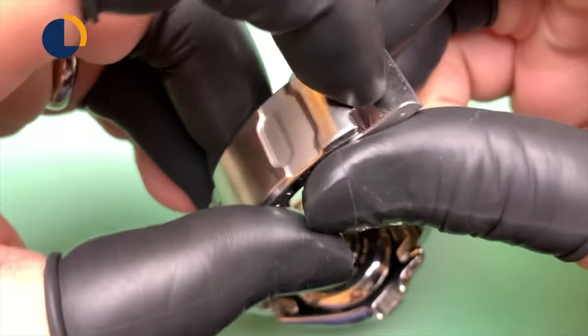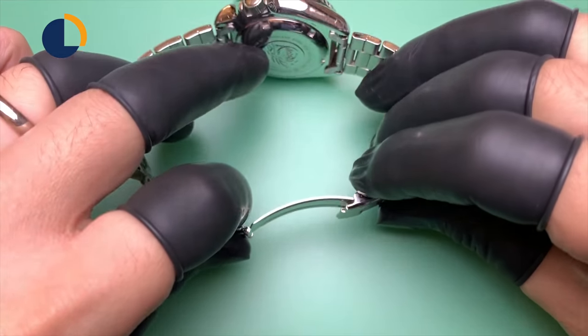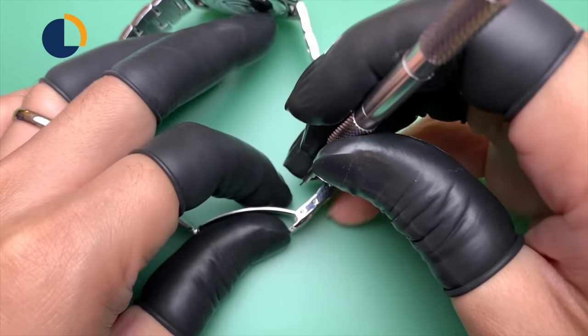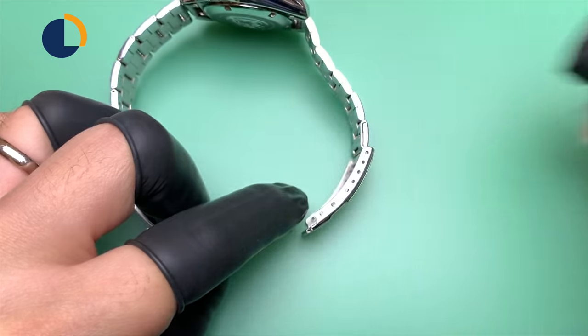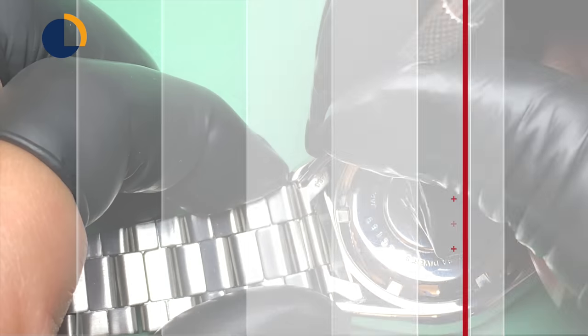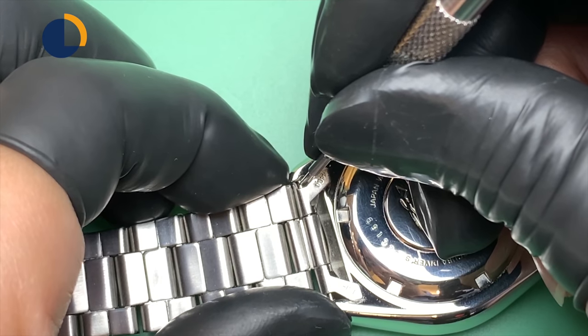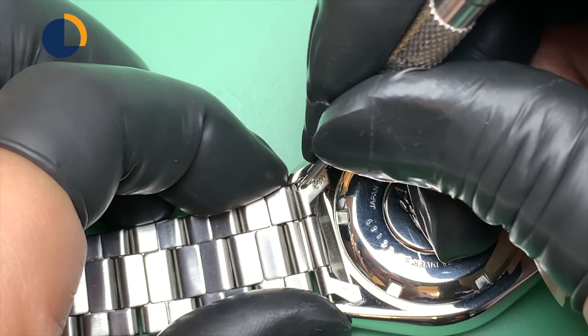So the first step will be removing the bracelet or strap. In this case it's the bracelet, so I will remove the clasp spring bar first so it can lay flat while I'm taking off the spring bar on the watch so I won't scratch the watch with the bracelet.